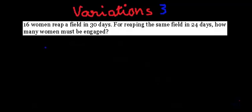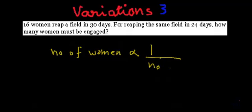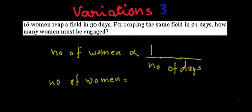So we can write: number of women is proportional to the inverse of number of days. This is called inverse proportion. As you can see, if you want the number of women to be more, the number of days — which is in the denominator on the right hand side — has to be less, and if the number of days is less, the number of women will be more, because everything else is constant.